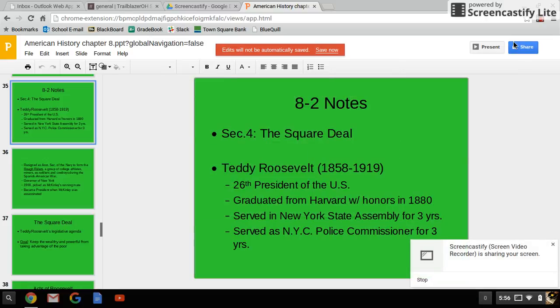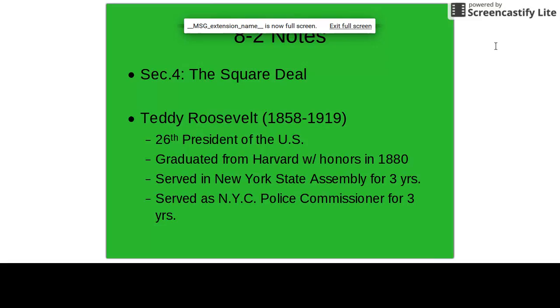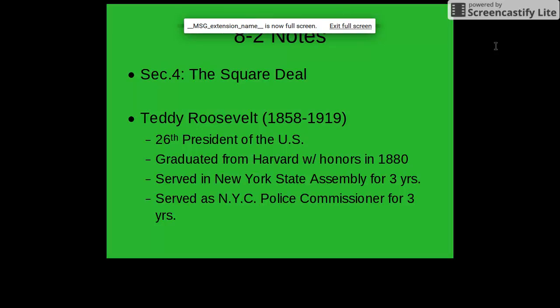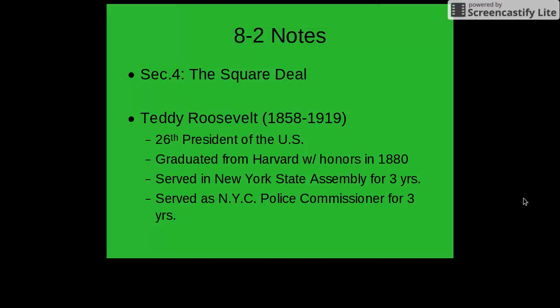Hello, students. This will be the third and final section of our Chapter 8 Notes dealing with the Progressive Era. This leads us into a discussion of the Square Deal, which was Teddy Roosevelt's legislative agenda.